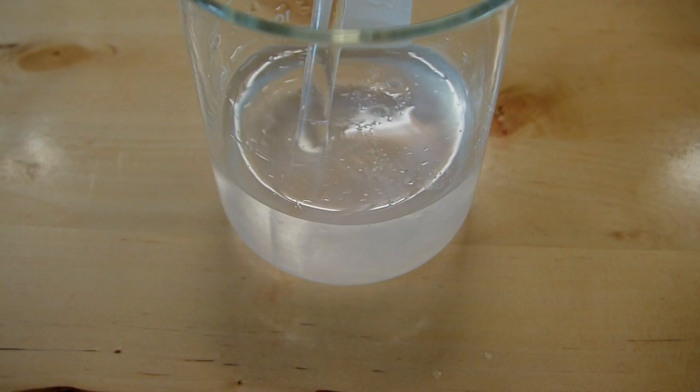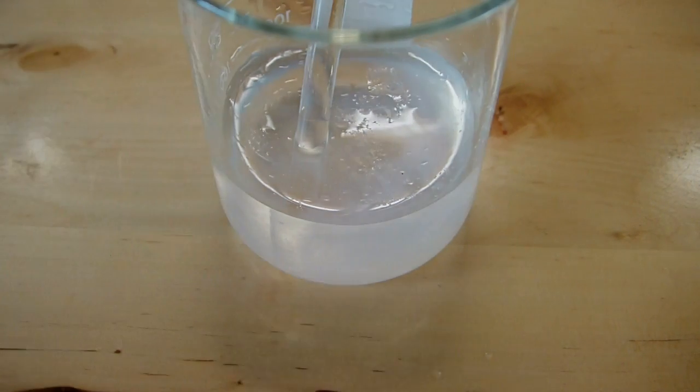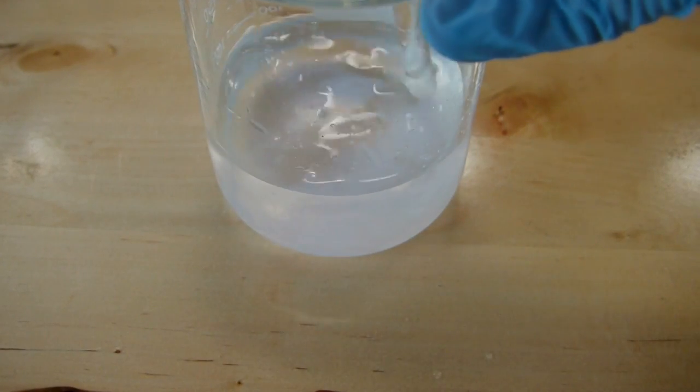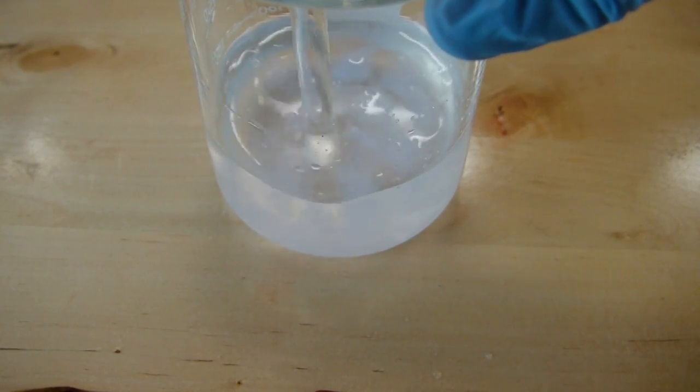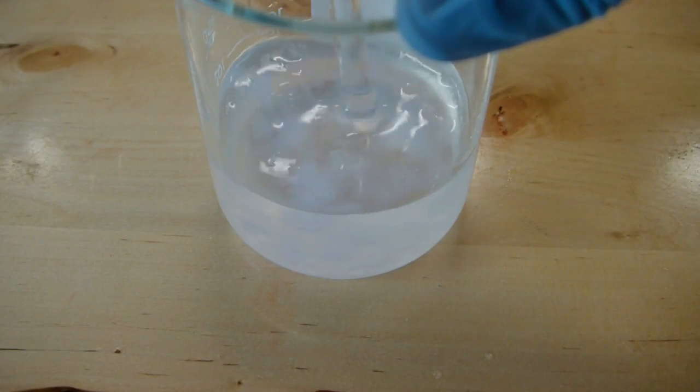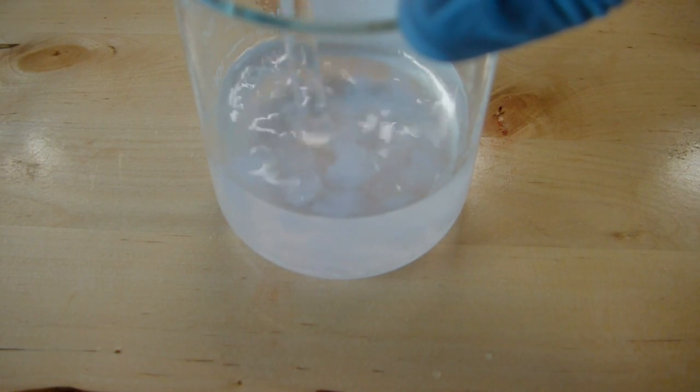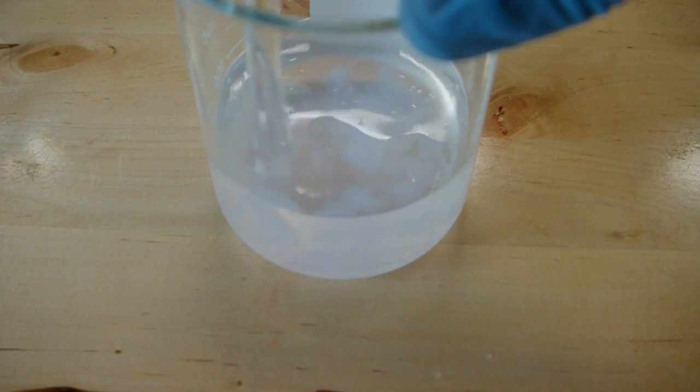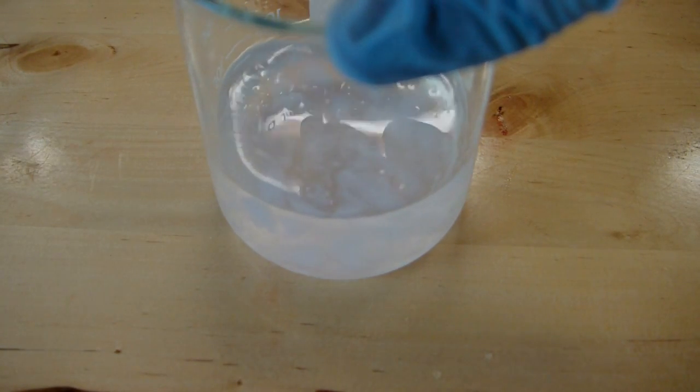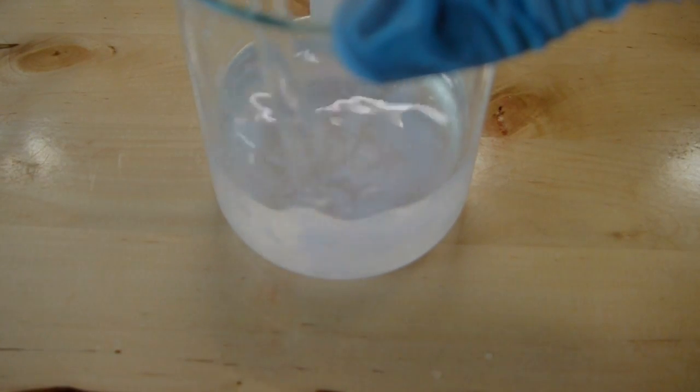Now the orthosilicic acid is almost a solid that you can see forming. It's really thick and sort of gummy. So you want to try and break up these clumps as much as possible to ensure that everything has been mixed very well.